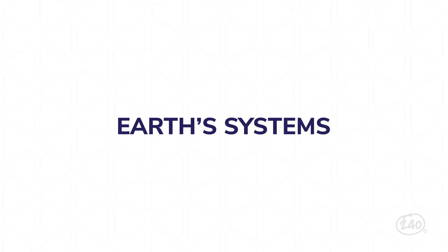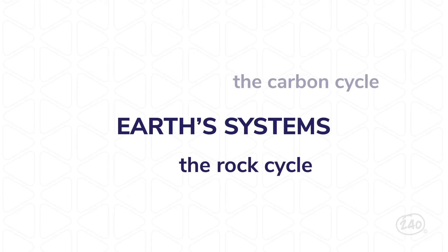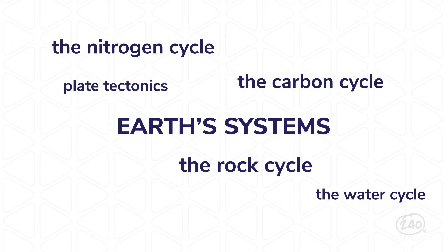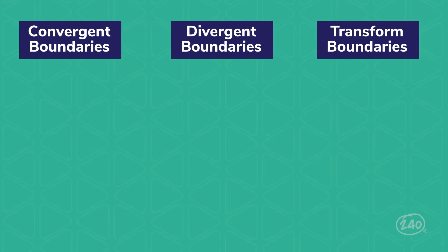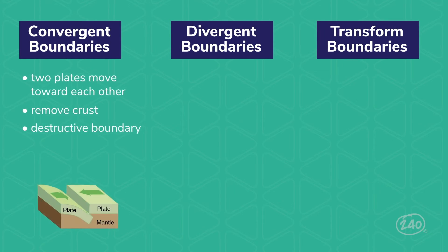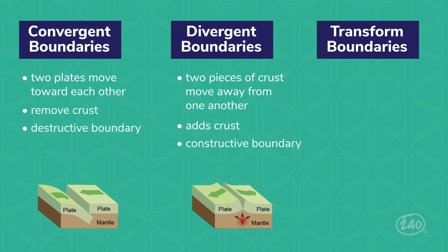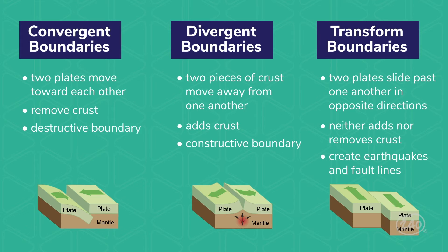If I could sum up Earth's systems in one word, it would be cycles. You're going to need to know all the big systems and cycles on our planet: the rock cycle, the carbon cycle, the nitrogen cycle, the water cycle, and all the stuff that goes into changing land on Earth — plate tectonics, volcanoes, and earthquakes, just to name a few. You'll need to know the difference between the three types of tectonic plate boundaries: convergent boundaries occur when two plates move towards each other; divergent boundaries occur when two plates move away from each other; and transform boundaries occur when two plates slide past each other.